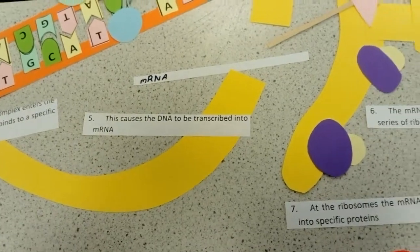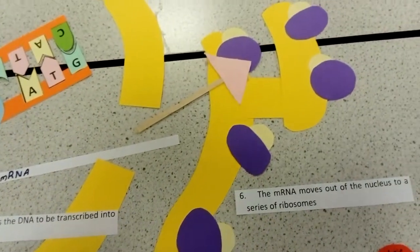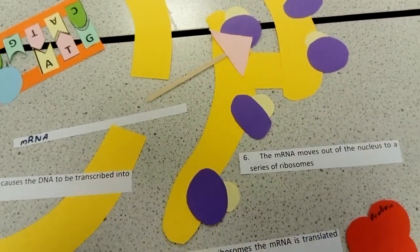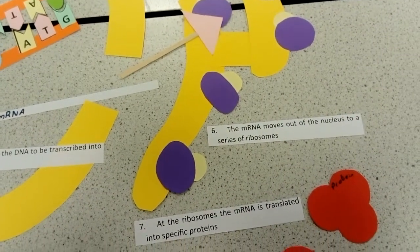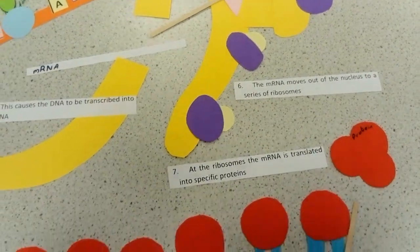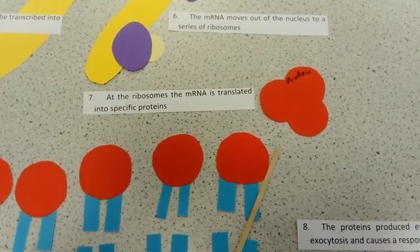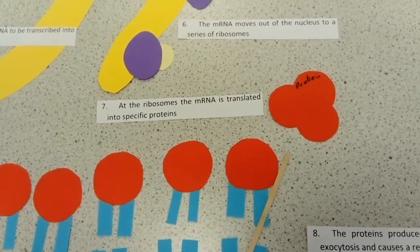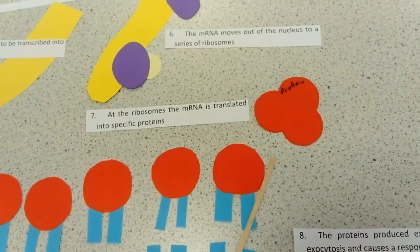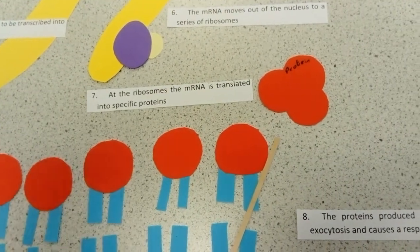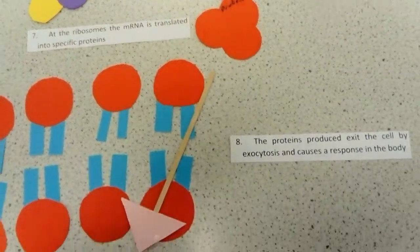This messenger RNA moves out into the cytoplasm — to ribosomes or rough endoplasmic reticulum — where it is then translated into some sort of proteins, which will either leave the cell or act in a way to cause some sort of response.